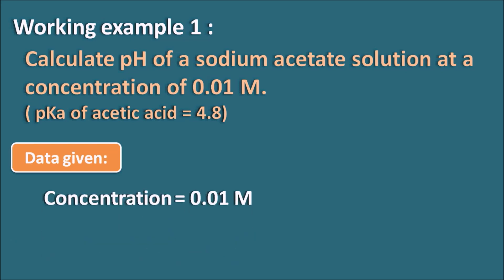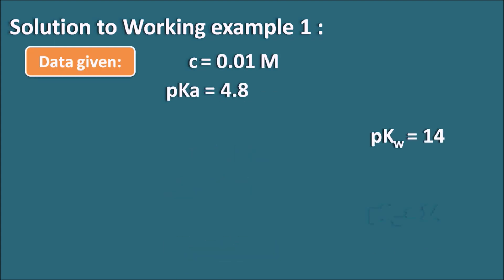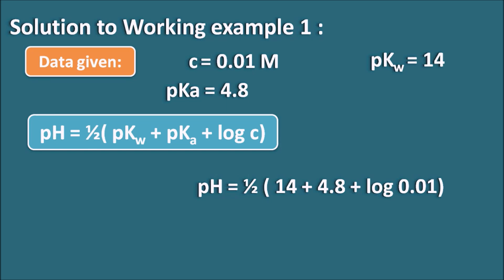Data given: concentration = 0.01 M, pK_a = 4.8, and pK_w = 14 at standard temperature conditions. Using the formula pH = ½(pK_w + pK_a + log c): pH = ½(14 + 4.8 + log(0.01)) = ½(14 + 4.8 − 2) = ½(18.8 − 2) = ½(16.8) = 8.4. The pH of the sodium acetate solution at 0.01 M concentration is 8.4.